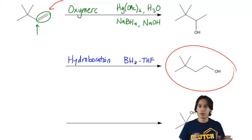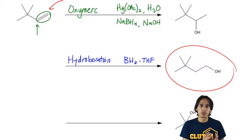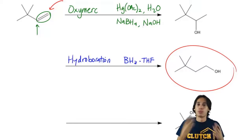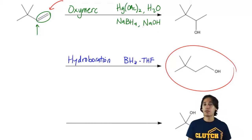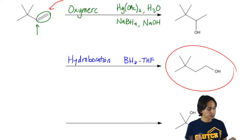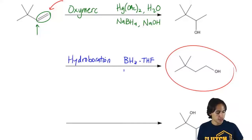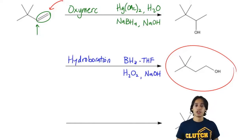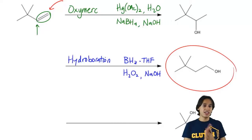Sometimes THF is listed as a solvent so it's not absolutely required that you write it, but sometimes you'll see it. That's it for the top step — just adding boron. The bottom is the oxidation step: hydroboration oxidation. Those reagents are hydrogen peroxide and a base. Those are the reagents that generate an anti-Markovnikov alcohol from a double bond.